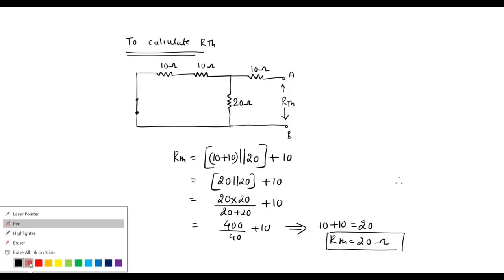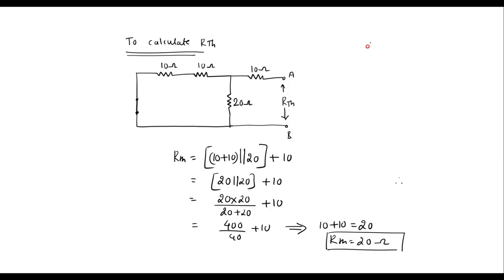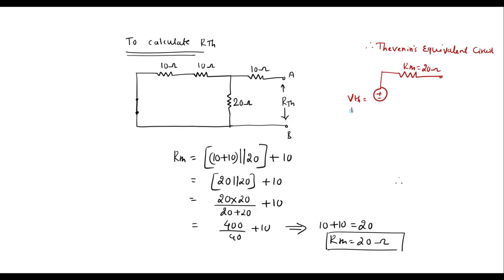Now let me draw Thevenin's equivalent circuit. The Thevenin's equivalent circuit consists of VTH in series with RTH. RTH equals 20 ohm and VTH equals 15 volts. This is terminal A and this is terminal B. This is Thevenin's equivalent circuit for the given circuit, where Thevenin's voltage is 15 volts and Thevenin's resistance is 20 ohm.